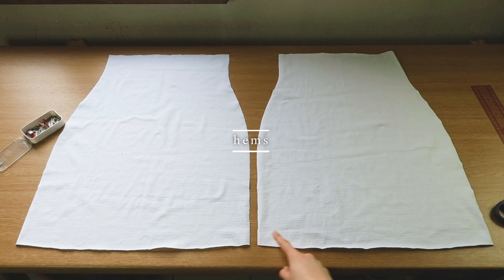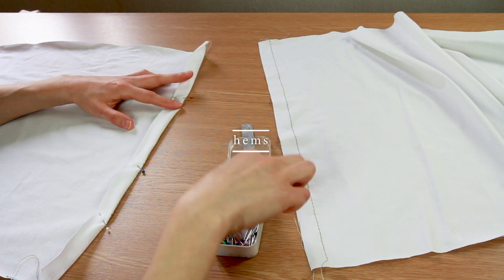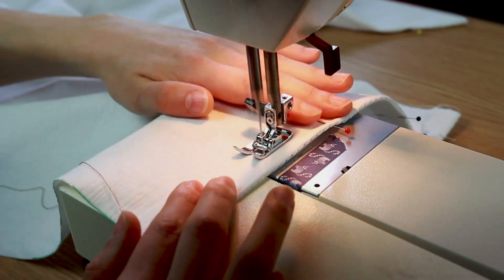First, we're going to sew the hems of the skirt with two centimeters of seam allowance. I use a zigzag stitch.